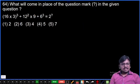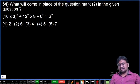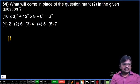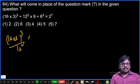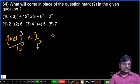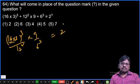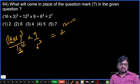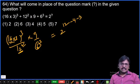Question 64: 16 into 3 whole cube by 12 squared into 9 by 6 cube equals 2 power x. Convert to powers of 2. 16 is 2 to the 4, cubed is 2 to the 12. 12 is 4 times 3, so 2 squared squared is 2 to the 4. 6 is 2 times 3, cubed is 2 cubed. Working through: 12 minus 4 is 8, minus 3 is 5. So 2 to the power 5. Fourth option.